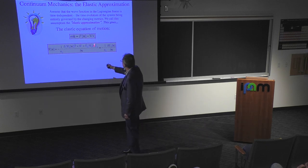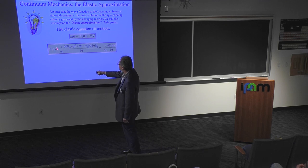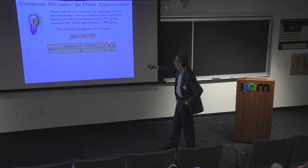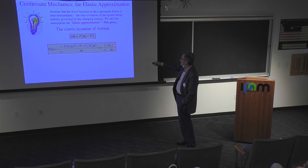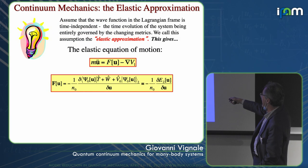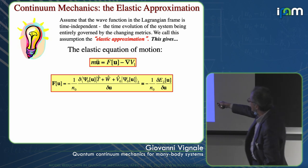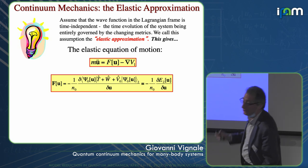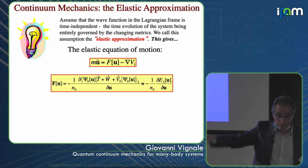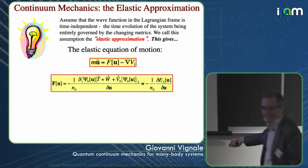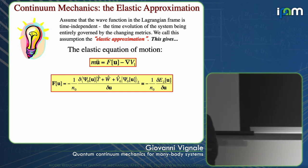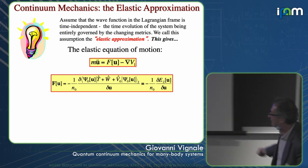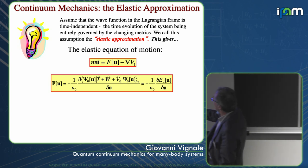Given this Psi-zero of U — the deformed ground state wave function — we can construct a generalized force, which is the derivative of the second-order energy as a function of U with respect to U. E2 is the energy calculated in this deformed ground state wave function, expanded to second order in U. This is basically a harmonic oscillator kind of equation of motion.